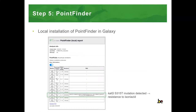Then, as the last step in the workflow, we check the AMR profiles of the samples. In this case, we used a local installation of the PointFinder tool in Galaxy. As you can see in this example output report, in one of the samples we find a mutation in the katG gene, which is associated with resistance to isoniazid.